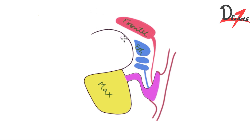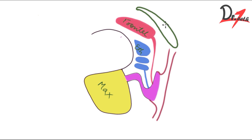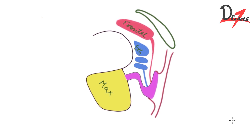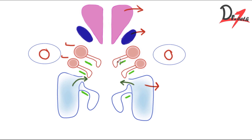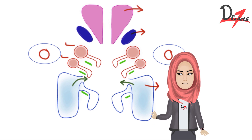What about the sphenoid sinus and the various parts of the ethmoid? The sphenoid sinus drains into the superior meatus. The posterior ethmoid sinus also drains into the superior meatus. So remember: the superior meatus receives drainage from the sphenoid sinus and the posterior ethmoid sinus.